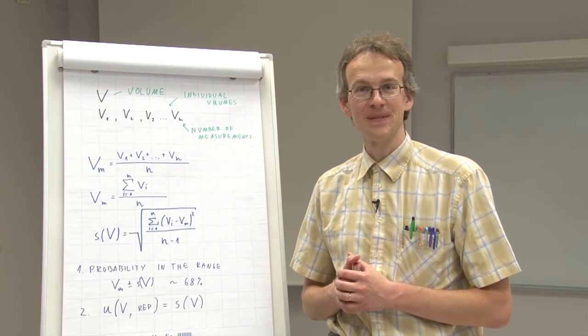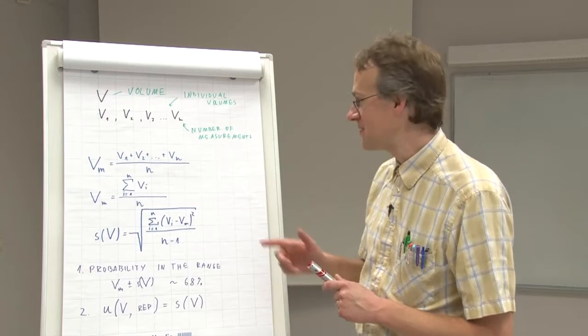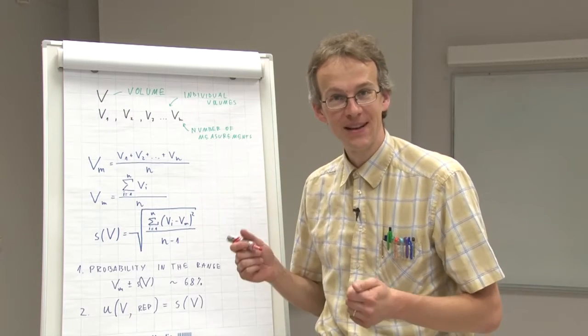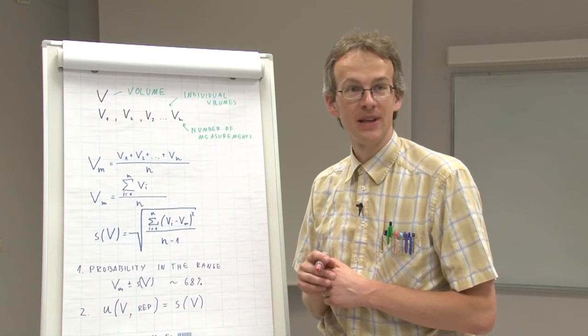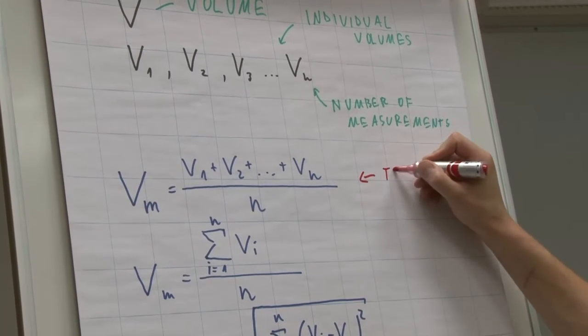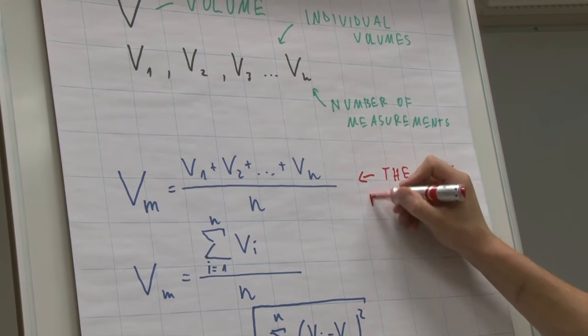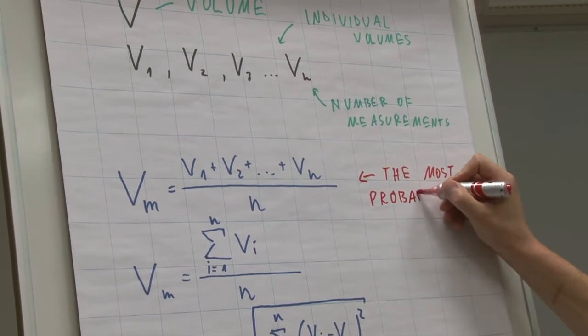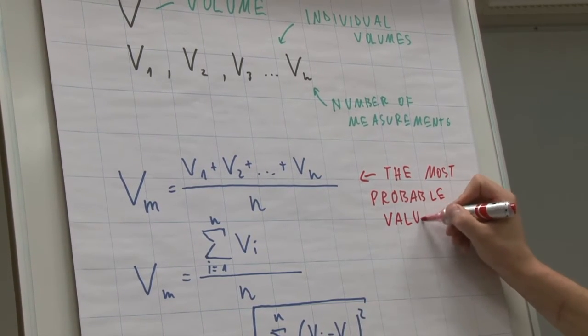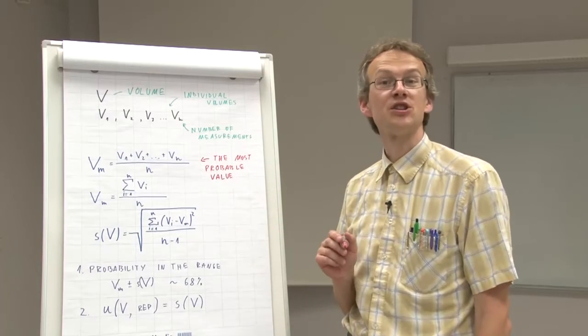Let us now briefly summarize what we just saw. The mean value characterizes the most probable value that we can obtain by a next pipetting. Then the standard deviation characterizes the scatter.